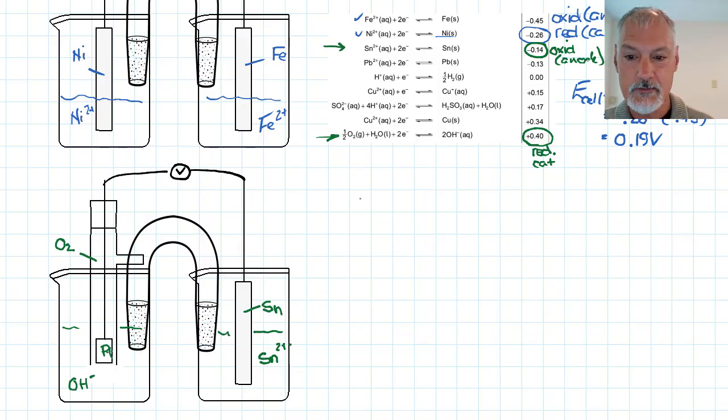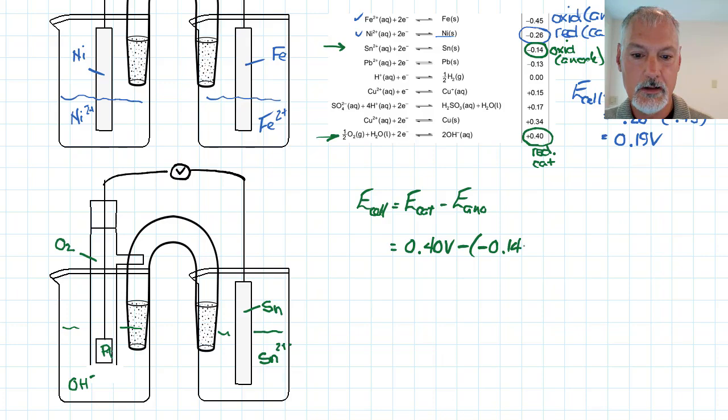By definition of the energy of the cell or to predict the energy of the cell, I take the energy of my cathode and I subtract the energy of my anode. So in this case, 0.4 volts minus 0.14 volts gives me 0.54 volts.